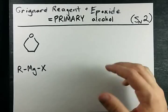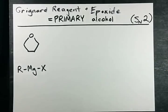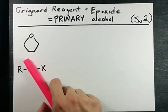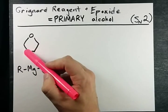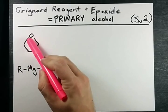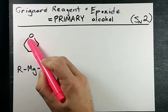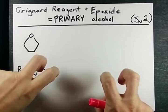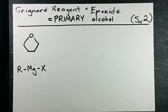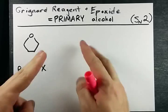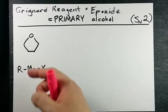But how do you make a primary alcohol? The answer is you have to use an epoxide, which is a carbon chain in a ring where oxygen is one of the members of that ring. We call it a heteroatom because it's different than carbon.